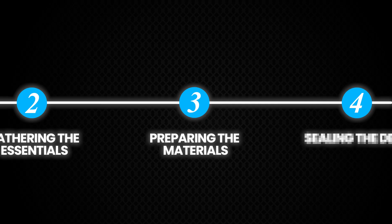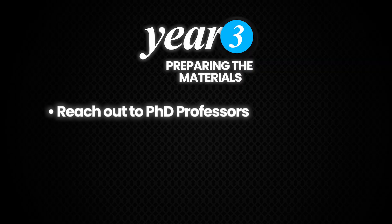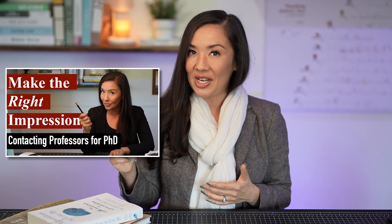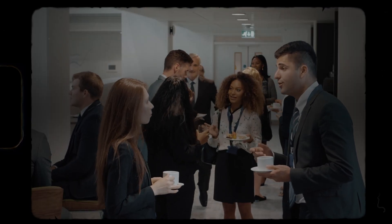Year three is all about preparing your application materials to be as strong as possible. Hopefully you've done several years of research and have some presentations. The first thing to do in year three is reach out and start to see who is accepting PhD students — I have a whole video on contacting professors. Do this as early as humanly possible. There's a psychological effect where the more people are familiar with you, the more they like you. Try to find opportunities to meet potential advisors in person; getting face time with them will definitely increase your chance of getting into those labs.